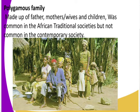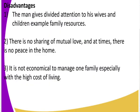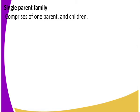Now let's look at the disadvantages of a polygamous family. It gives a man a divided orientation to his wives and children. For example, if a man has ten wives, he may spend a whole month with the first wife and not give attention to the others. So attention is very divided. There is no sharing of mutual love, and it is not economical to manage such a family.